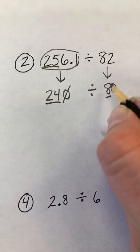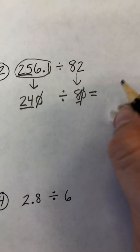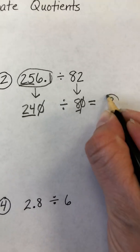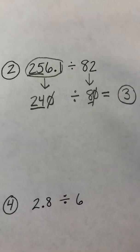Again, let's eliminate our extra zeros that we don't need. And 24 divided by 8 is 3. So that is our final answer. So 256 and 1 tenth divided by 82 is about 3.